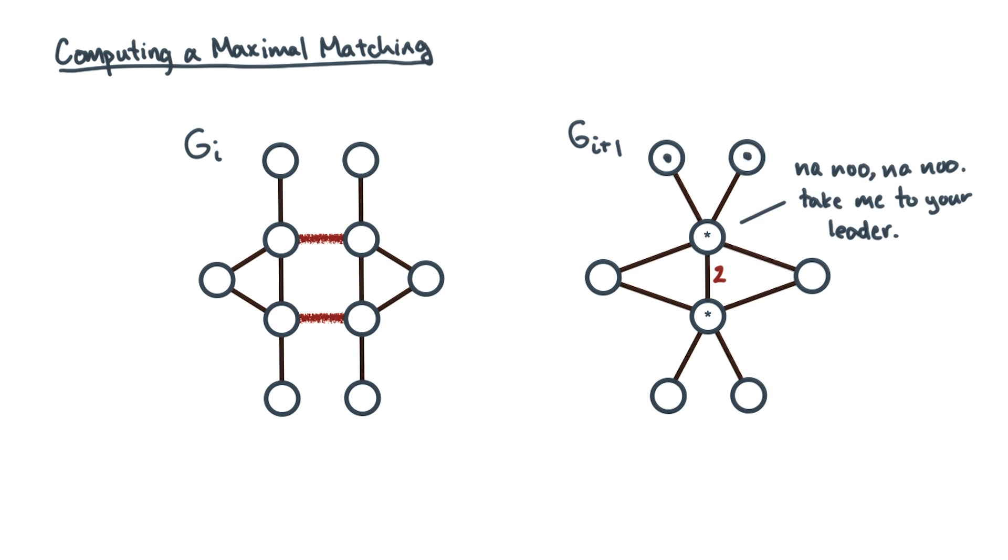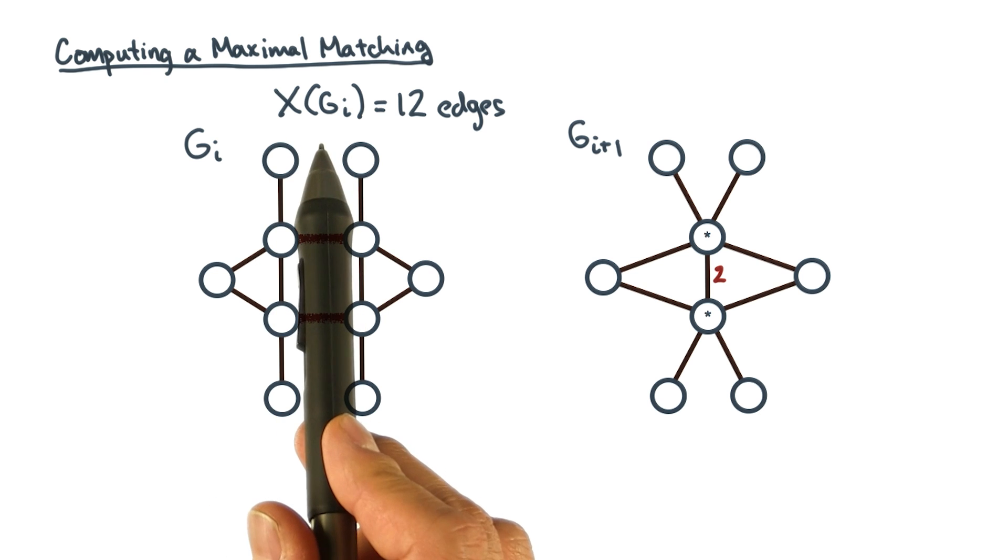Now, if you were to sum the edge weights in the original graph, you'd get 12. That's because there are 12 edges each of unit weight. Let me use the notation X of some object to count the number of edges in that object.